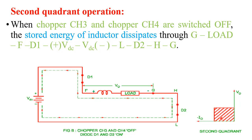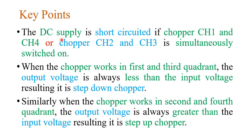Key points: the DC supply is short-circuited if choppers CH1 and CH4, or CH2 and CH3, are switched on simultaneously. When the chopper works in the 1st and 3rd quadrant, output voltage is always less than input voltage — it acts as a step-down chopper. When working in the 2nd and 4th quadrant, output voltage is greater than input voltage — it acts as a step-up chopper. Thank you for watching; please like, subscribe, and share the channel.